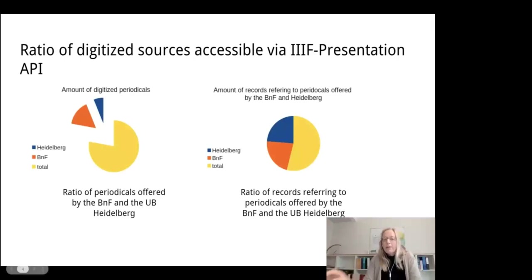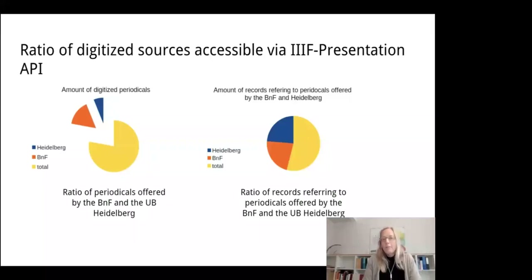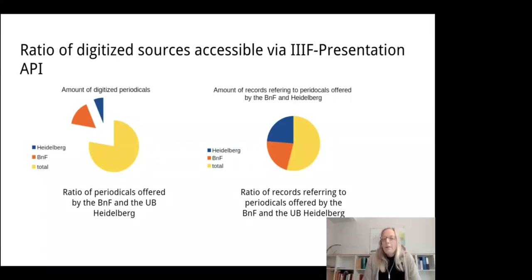Today many of the periodicals are digitized, especially those important for the research project. Nearly half of all records in the database refer to periodicals offered as IIIF manifests by the BnF — the Bibliothèque nationale de France — and Heidelberg University Library. The idea was to embed a IIIF viewer in our future website where the user will find the volume opened at the very page of interest, ready to be flipped through.